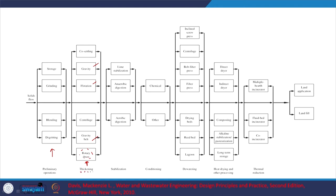After thickening we have greater solids concentration. Depending upon the type of solids, stabilization can be anaerobic or aerobic digestion. Lime stabilization with respect to pH is also required — we will look at that later. Then conditioning, typically adding chemicals so that dewaterability is relatively better. For dewatering we see different kinds of equipment: belt filter press, which is sometimes used during thickening itself, inclined screw press, and filter press. Some thermal process may be required and then land application. This is the whole cycle.